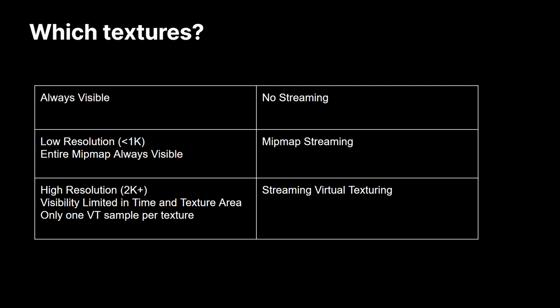Which textures do you use streaming on? If they are always visible throughout the entire game or scene, you don't need streaming — they'll always be in memory anyway. If they're low resolution or an entire mipmap is always visible, use mipmap streaming. Use streaming virtual texturing if textures are really high resolution, not always visible, and not entirely visible — for example, a character facing the camera whose backside isn't visible and who isn't always in view. These are great candidates. Also, only use VT if the texture is sampled once in your shader; if you sample a noise texture many times, the per-sample VT cost may not be worth it.